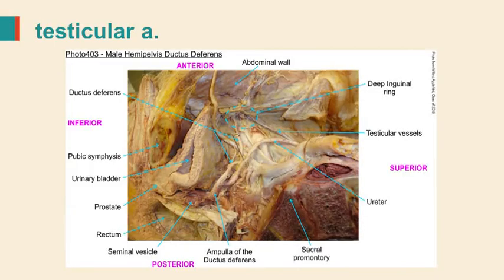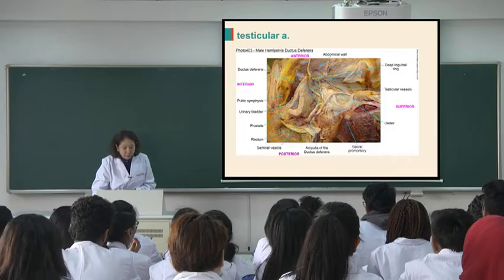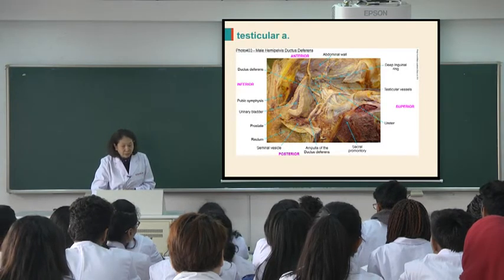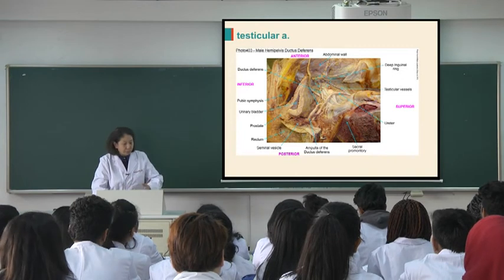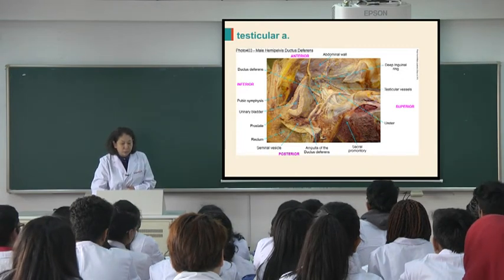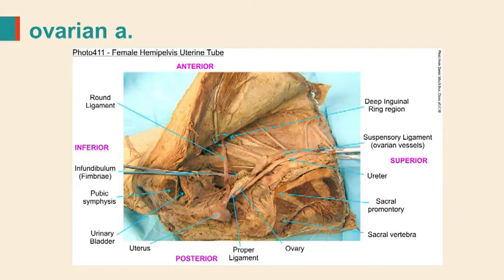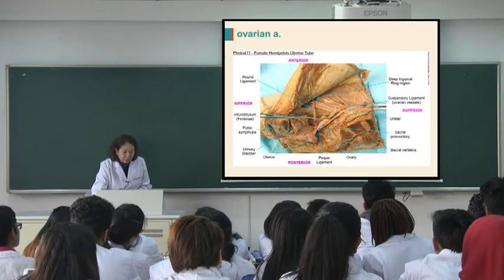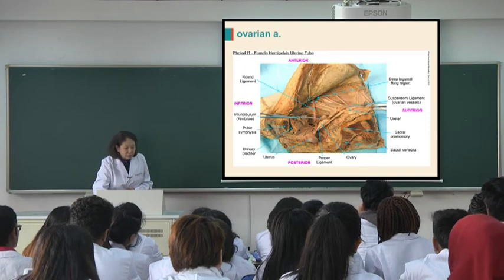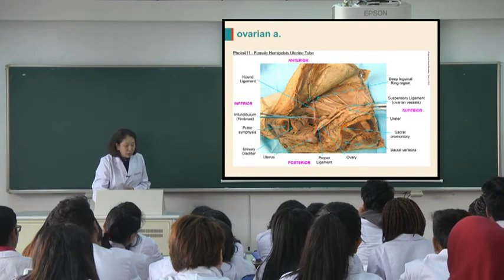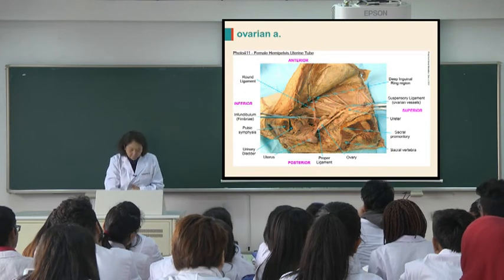Please remember: the gonadal artery is a general name. In males, it is named the testicular artery; in females, it is named the ovarian artery. The blood vessel is very thin and travels a long distance. In males, it passes through the inguinal canal. This is a true anatomical picture showing the deep inguinal ring. The testicular artery, accompanied by a vein, passes through the deep inguinal ring. Here is the ovary, and the blood vessels pass through the suspensory ligament to reach the ovary. This organ is the uterus, and here is the urinary bladder.